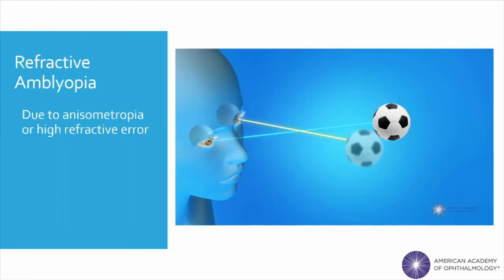Refractive amblyopia happens when there is either a large amount of refractive error in both eyes, or if there is an unequal amount of refractive error between the two eyes, a condition called anisometropia. Significant myopic, hyperopic, or astigmatic refractive error prevents light from being focused on the retina, resulting in a blurry image viewed by the affected eye, like what is happening with the soccer ball in this image. Over time, the brain will learn to ignore the eye with the blurry image and favor making connections to the eye with the clear image, resulting in unilateral refractive amblyopia. More rarely, this can be a bilateral process due to high refractive error in both eyes. This type of amblyopia is the most difficult to diagnose, as the eyes appear structurally normal and can go undiagnosed for years until the vision is formally tested.